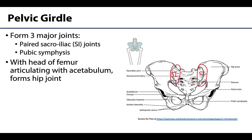The SI joints are where the coxal bones articulate with the sacrum, and these are weight-bearing compound joints that only allow very slight mobility, which makes sense regarding their important role in bearing the weight of that upright posture.